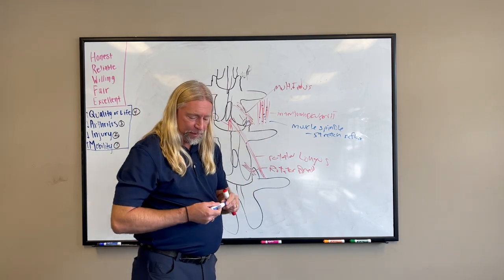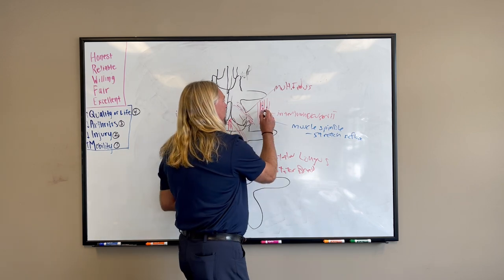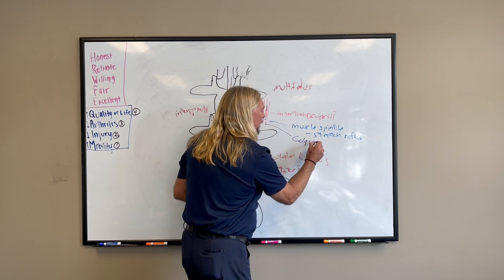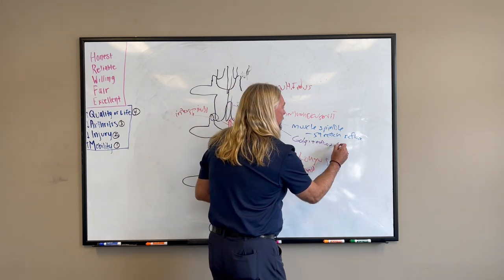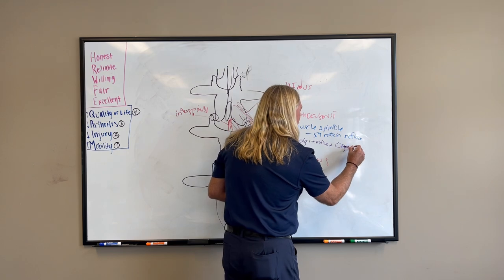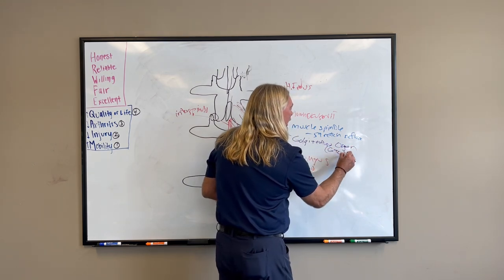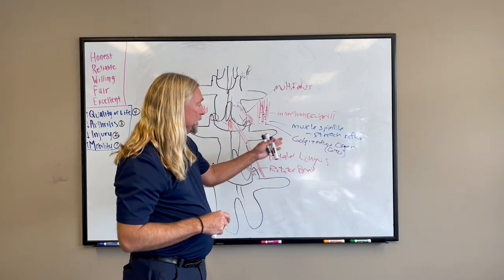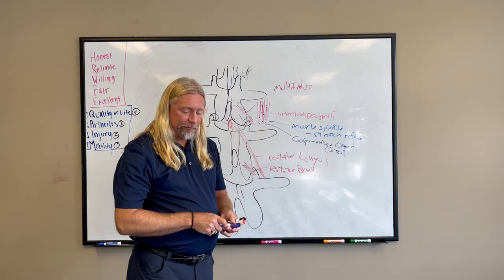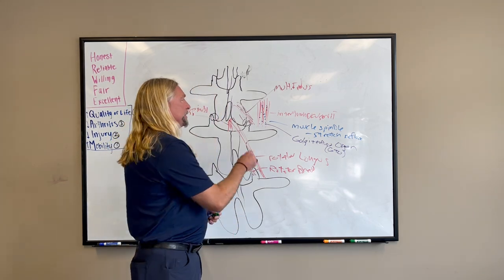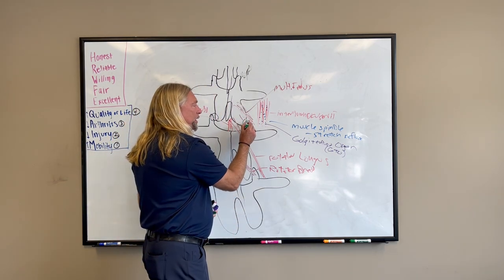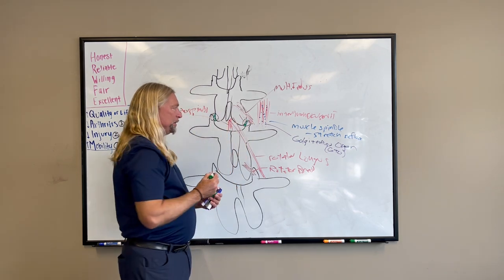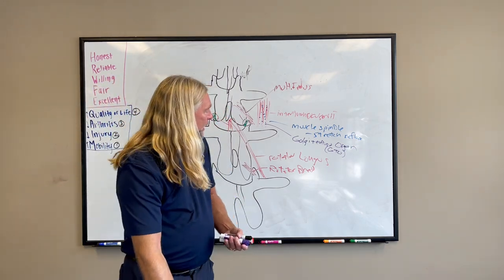You also have other receptors in there that are called Golgi tendon organ. So you have a Golgi tendon organ, GTO, and that does stretch reflex in the tendon. You also have receptors in the facet joints that are called joint receptors. The joint receptors are actually in these facet joints. So these are some of the different receptors that you have that we're actually working on.